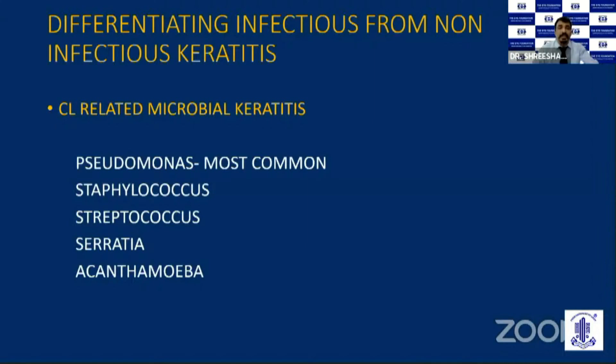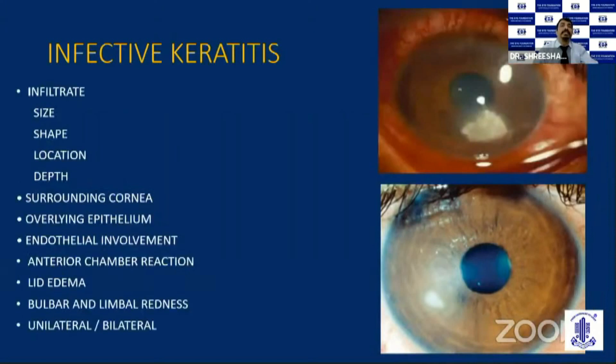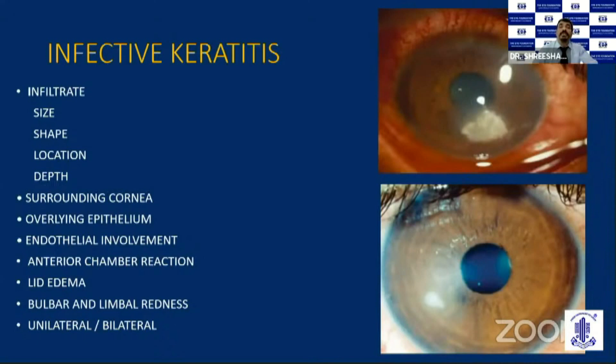These patients can have moderate to severe symptoms — redness, pain, photophobia, and puffiness of lids. The infiltrate can vary in size from one to four millimeters in contact lens-related keratitis and can assume different shapes. There can be epithelial breakdown in these cases. The symptoms are much more pronounced compared to non-infectious keratitis, the depth of ulcers can vary and extend right up to the endothelium, and patients can even have hypopyon.